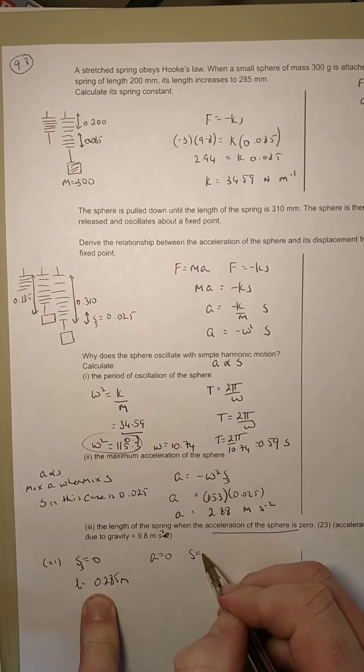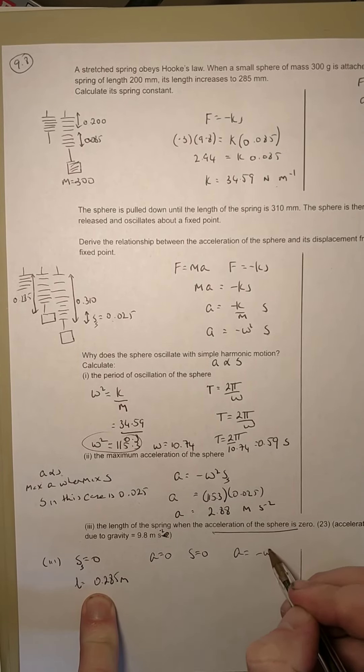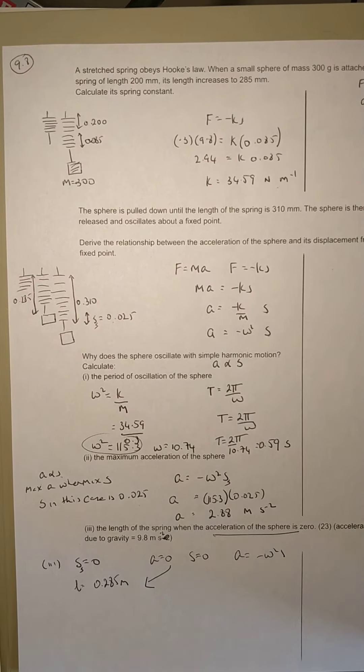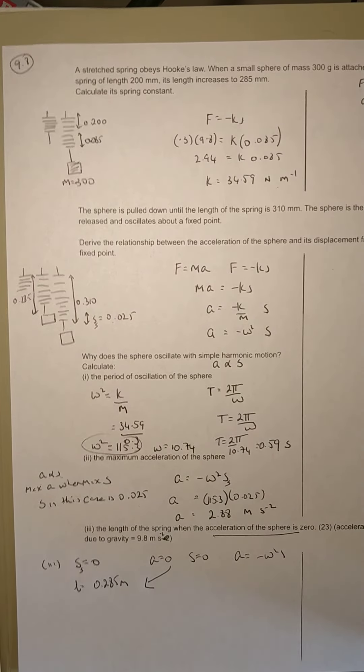from 0.285 to 0.31, so the displacement x is 0.025. That's the maximum displacement. So a equals minus omega squared times s. We have omega squared from here. If you haven't shown that, you